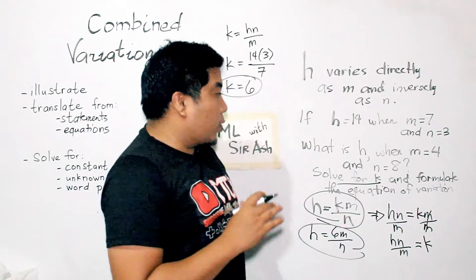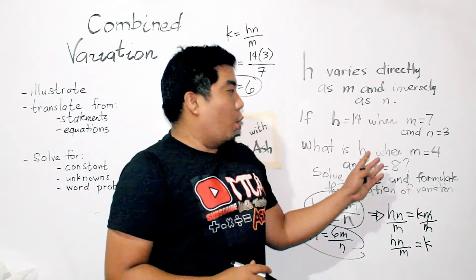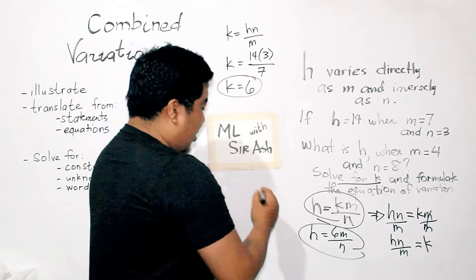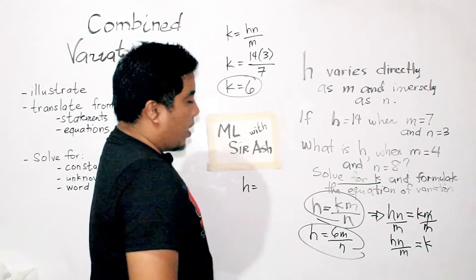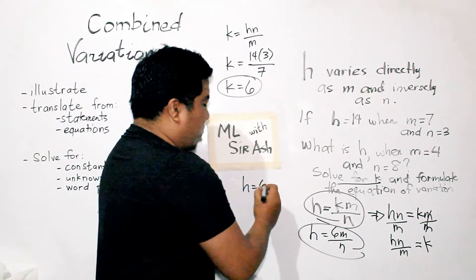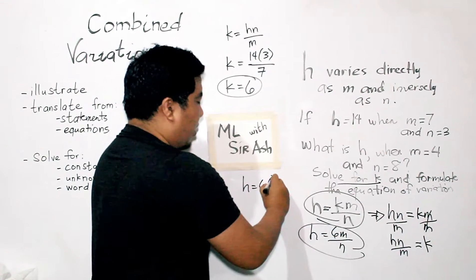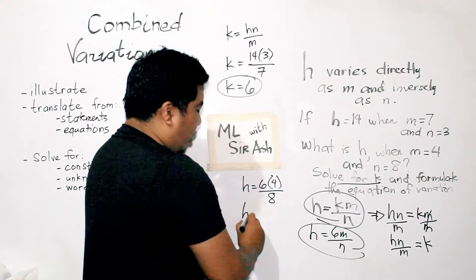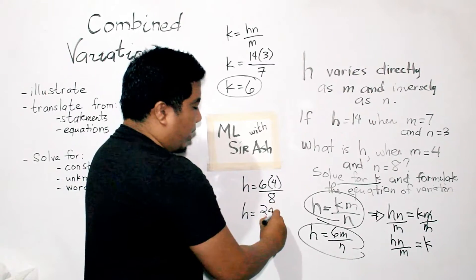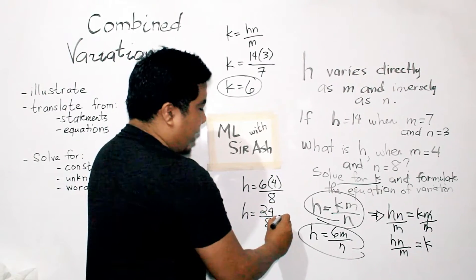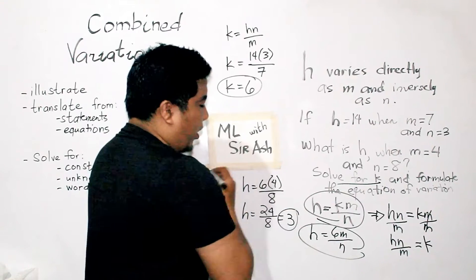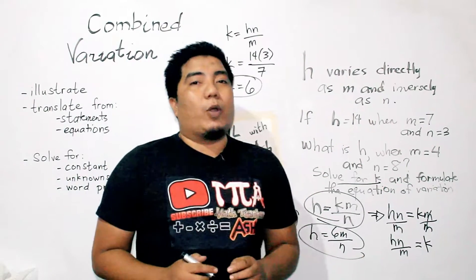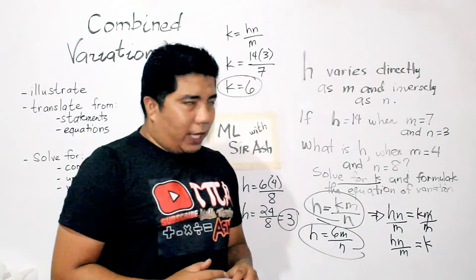Now we solve for the last question: what is H when M is 4 and N is 8? Using our equation, H = 6 times 4 over 8, which is 24 over 8, and that equals 3. Therefore, H is equal to 3 when M is 4 and N is equal to 8.